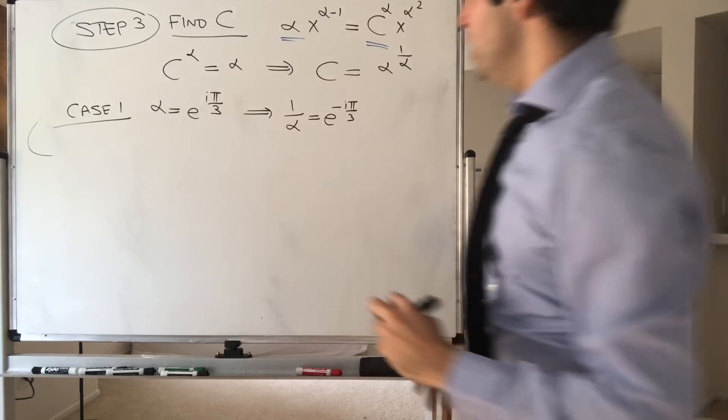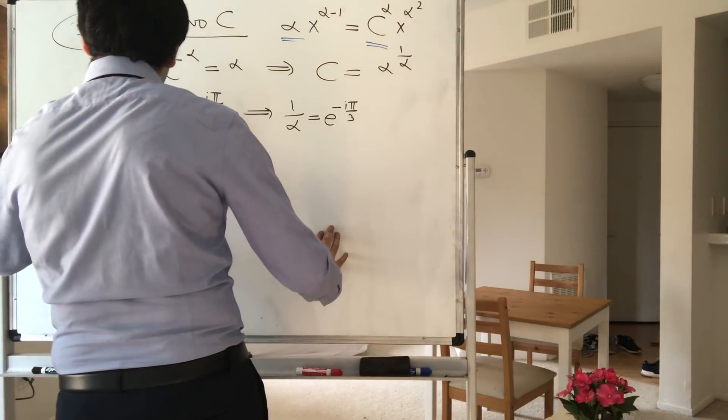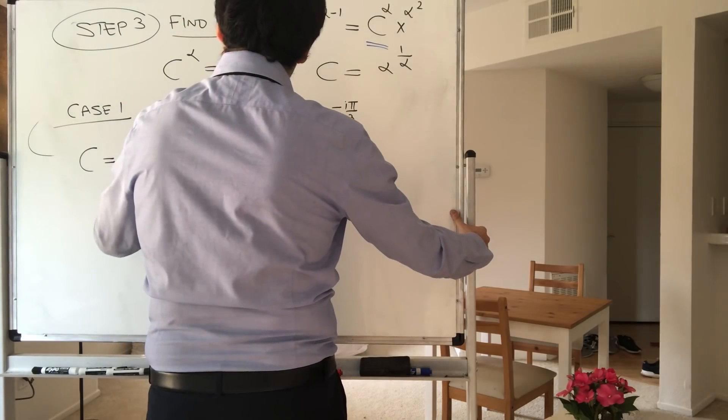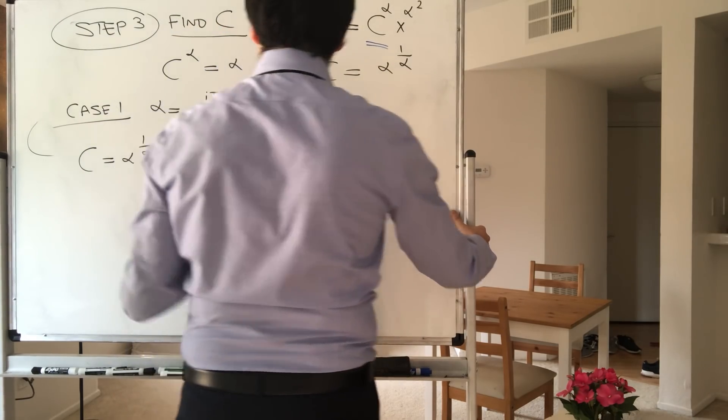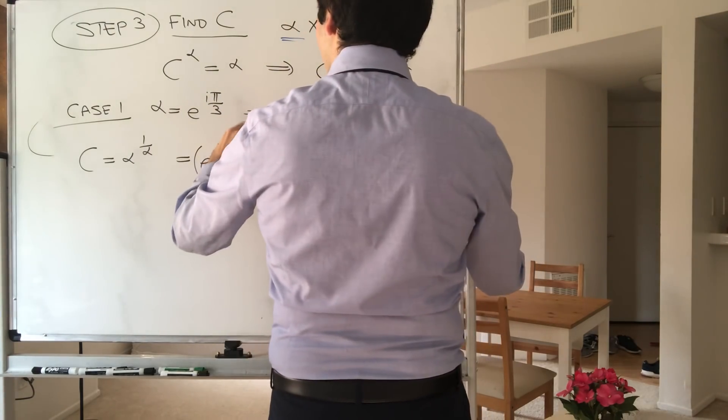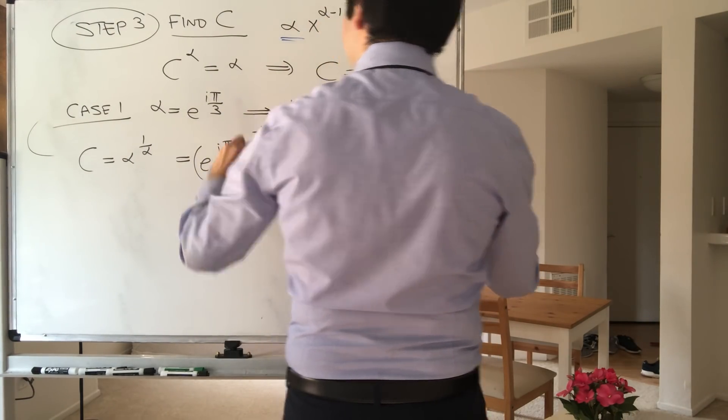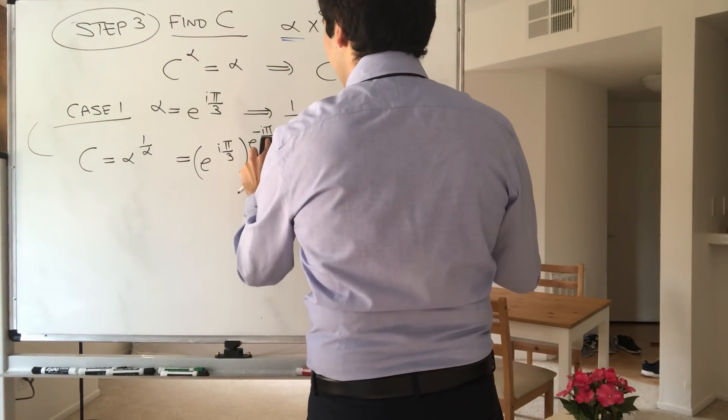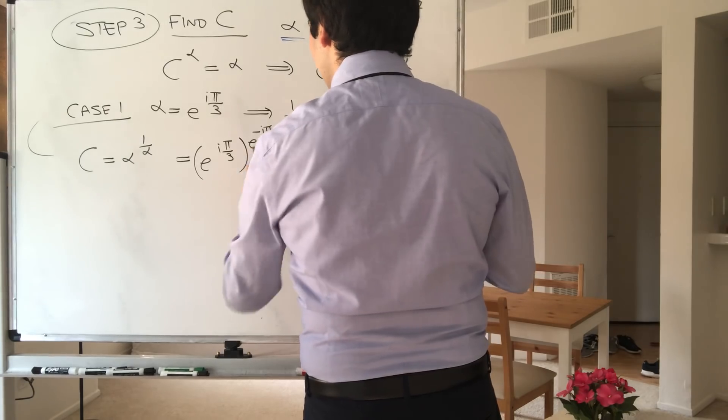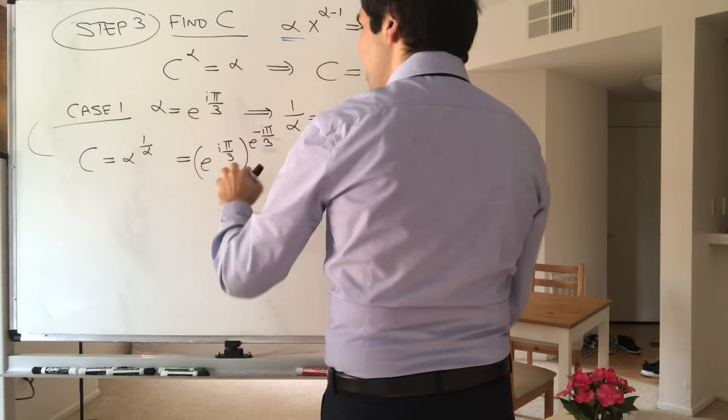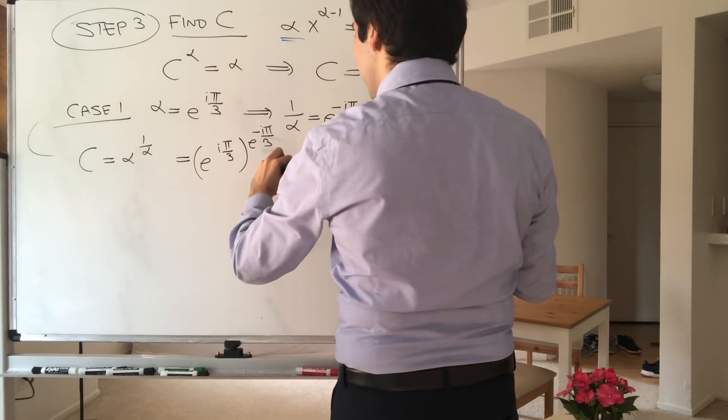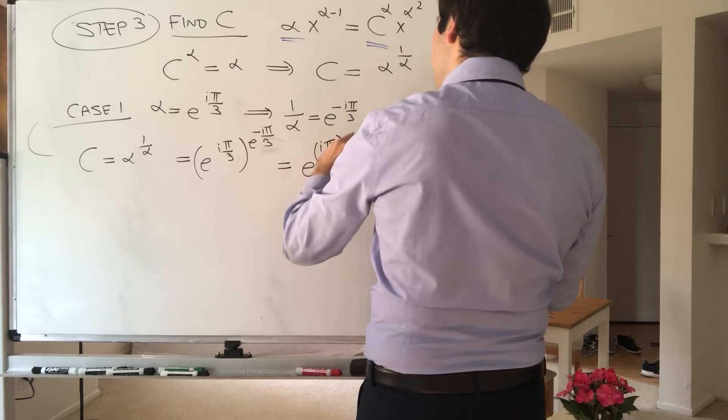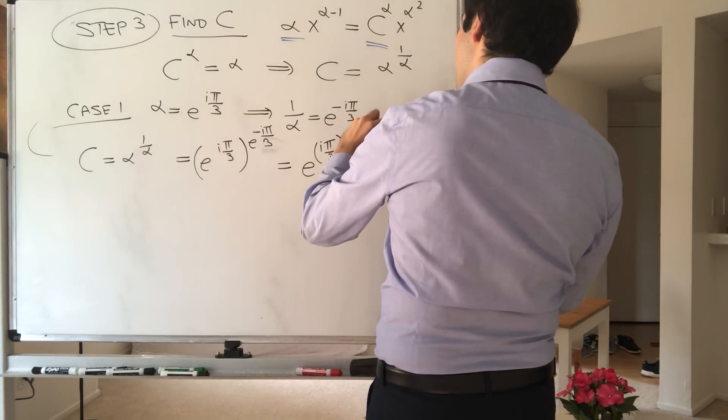All right, and therefore, c is just alpha to the 1 over alpha, which is just e to the i pi over 3 to the e to the minus i pi over 3 power. Seriously, when would you take an e to the minus i pi over 3 power? Definitely not in the real world. But then the nice thing is, with exponents, you just multiply those exponents. So you get e to the i pi over 3 times e to the minus i pi over 3.